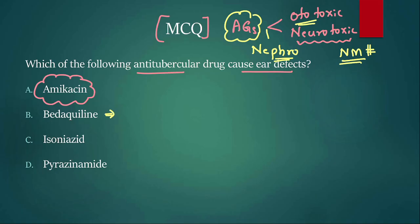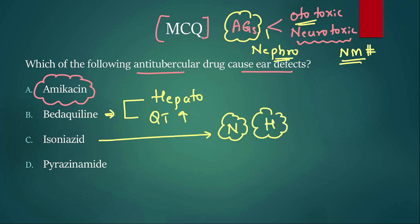Bedaquiline is a recently approved drug, not recently, 10-12 years back. It inhibits mycobacterial ATP synthase. Two important adverse effects are it is toxic to the liver, hepatotoxic and it can cause QT prolongation. Isoniazid, simple to remember. It causes N for peripheral neuropathy and managed with pyridoxine. H it is going to cause hepatotoxicity. Pyrazinamide starts with P. Remember it can cause pain. What pain? Joint pain. Why? Because it increases uric acid. We understood the major adverse effects of isoniazid and pyrazinamide.